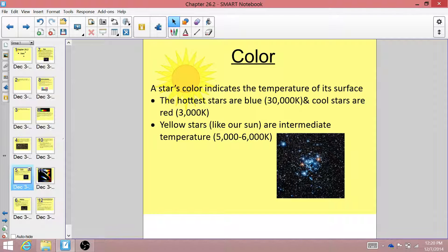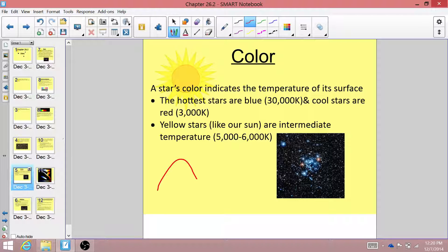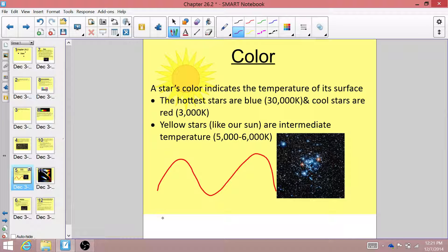The first way we classify stars is using color. A star's color indicates the temperature of its surface. So remember, we talked about light, and how red light has a very long wavelength, and that's because it has a very low energy. And at the other end of the rainbow, purple light has a much shorter wavelength because it has a lot more energy.